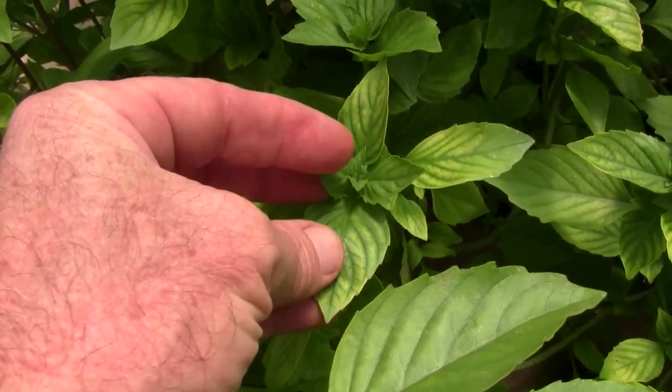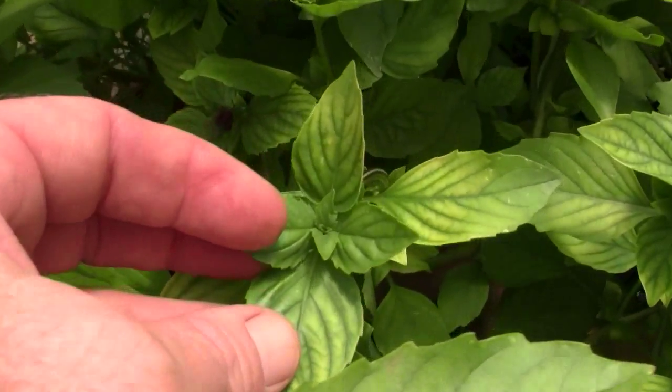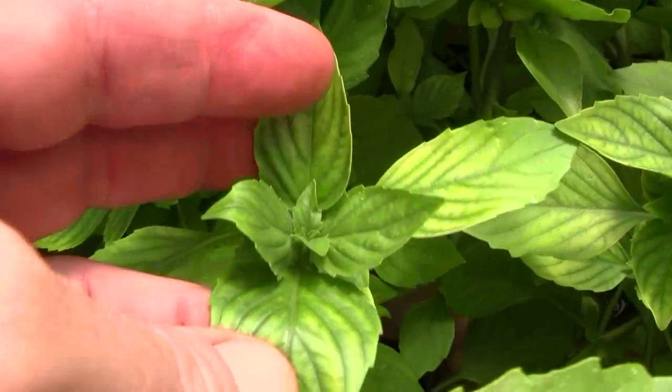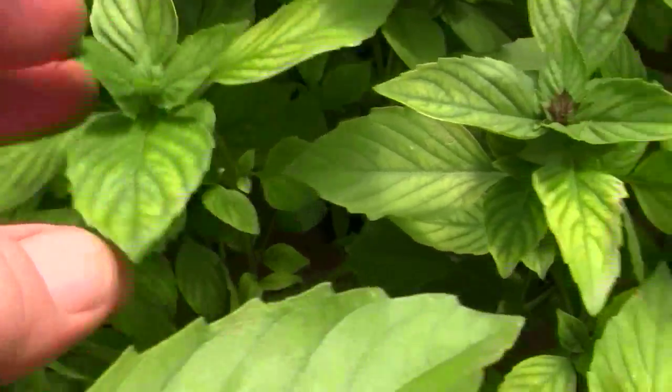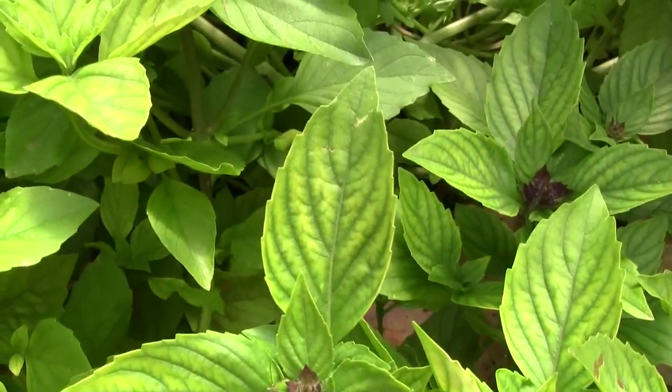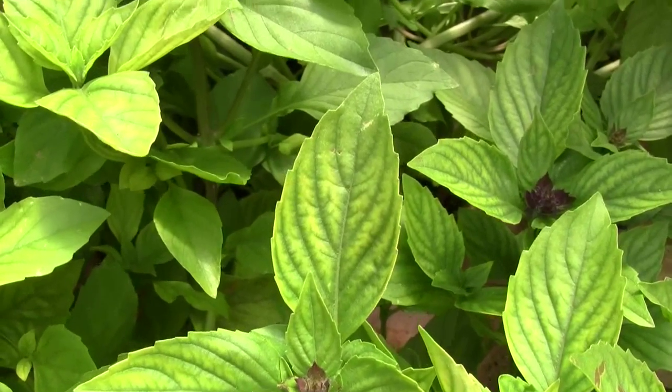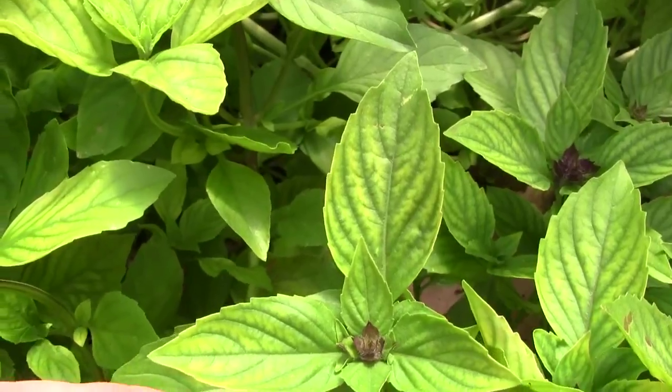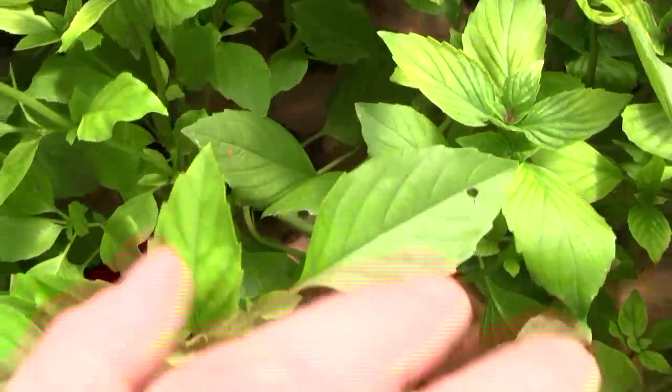You can see the new leaves are coming in green right in the center of the rosette, whereas the older leaves were yellowed. You can see the greening coming in around the veins and spreading out across the leaves.